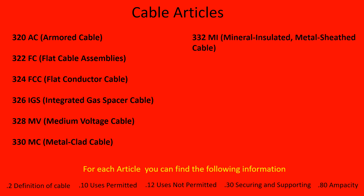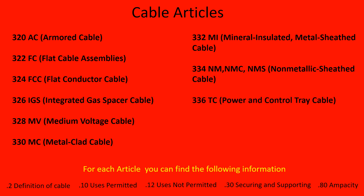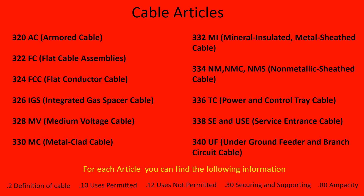Article 332: MI, mineral insulated metal sheath cable. Article 334: NM, NMC, and NMS — non-metallic sheath cable. Article 336: TC, power and control tray cable. Article 338: SE and USE, service entrance cable. And Article 340: UF, underground feeder and branch circuit cable. This covers all of the cable types in the NEC that have their own specific article.